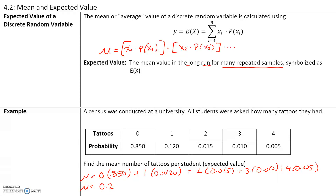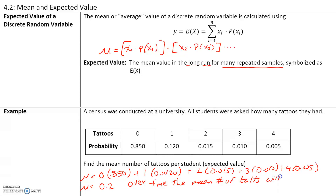Here's the interpretation: over time, the mean number of tattoos will be 0.2 per student. A student can't get 0.2 of a tattoo, but this is just an idea that more students will not have a tattoo than will, because the mean is so low. This represents that over time, the mean number of tattoos will be 0.2.